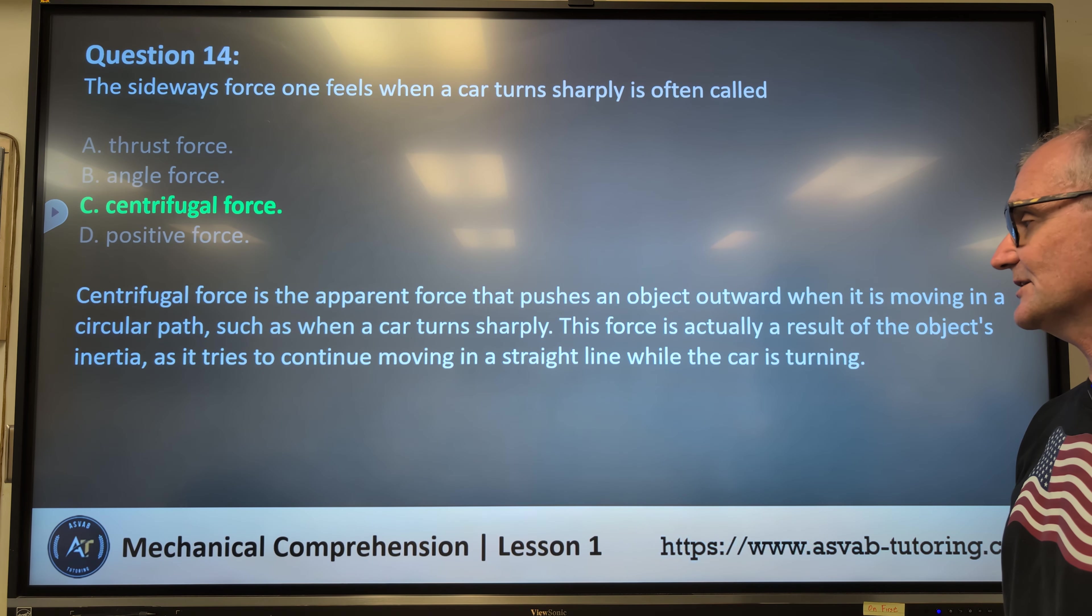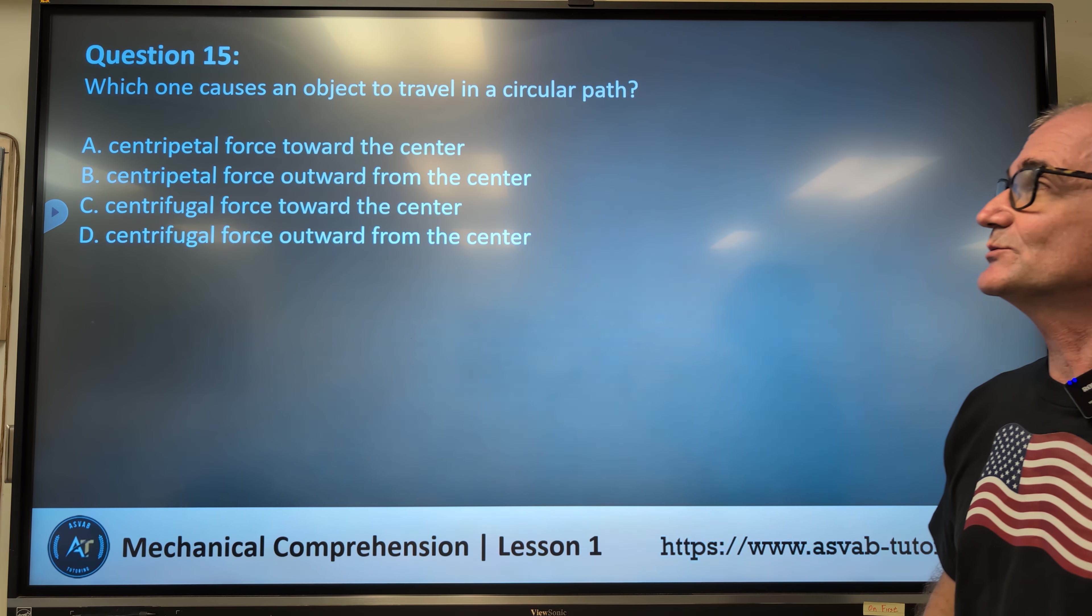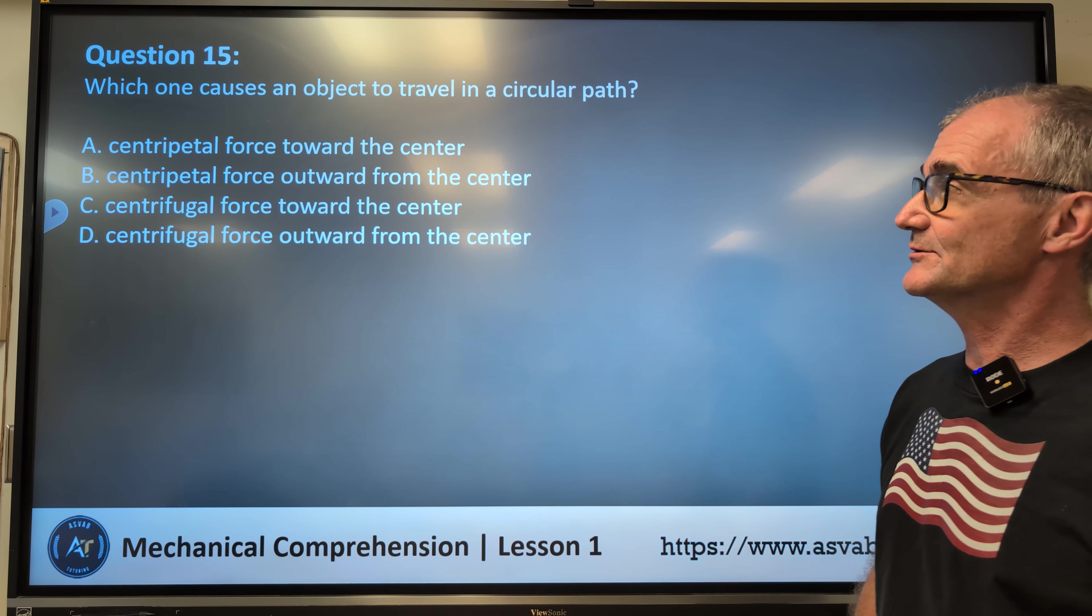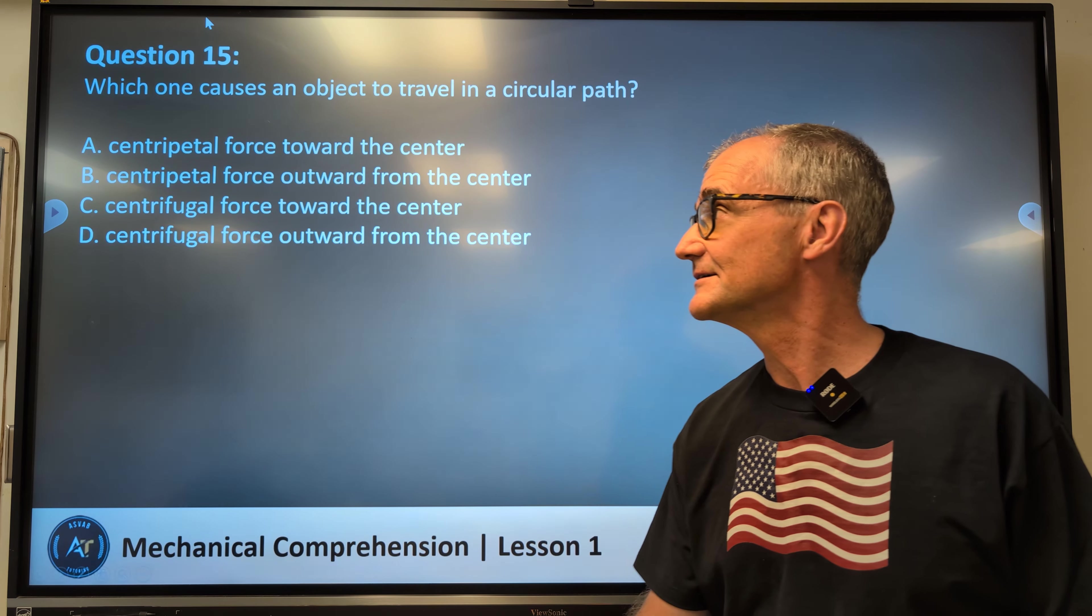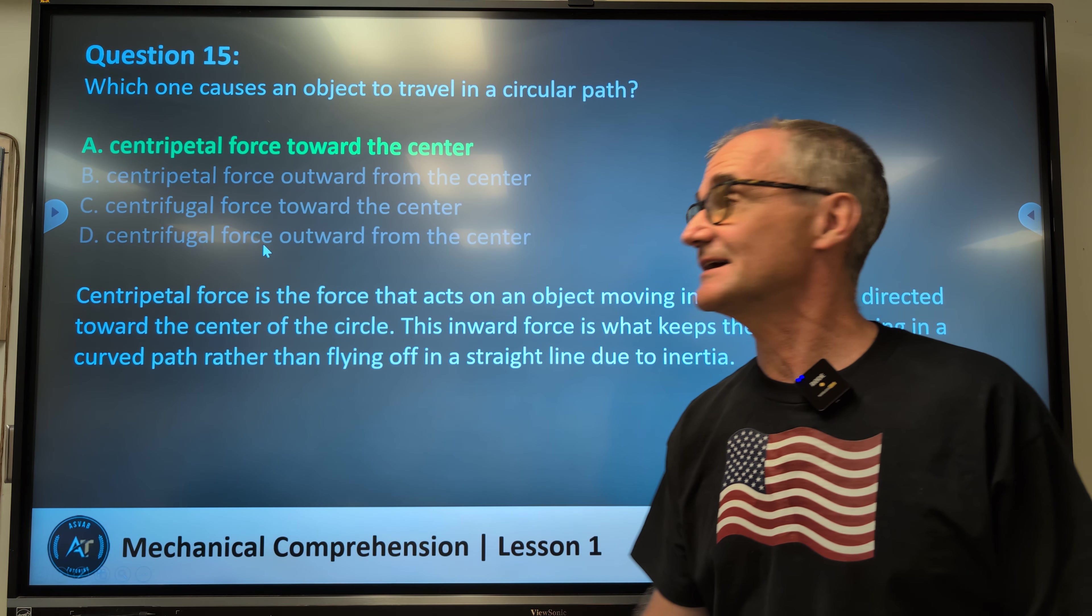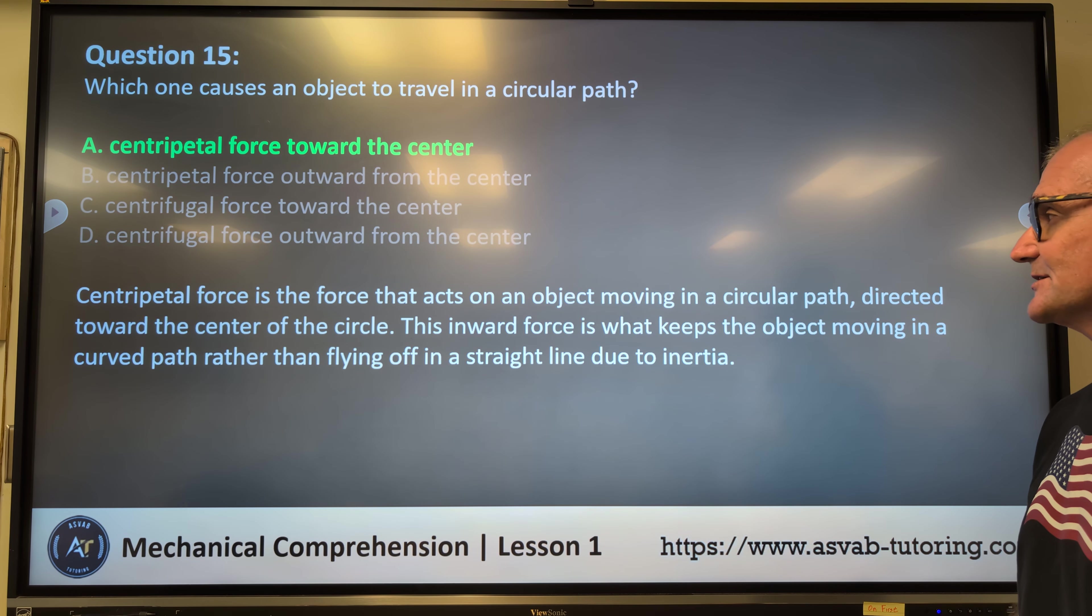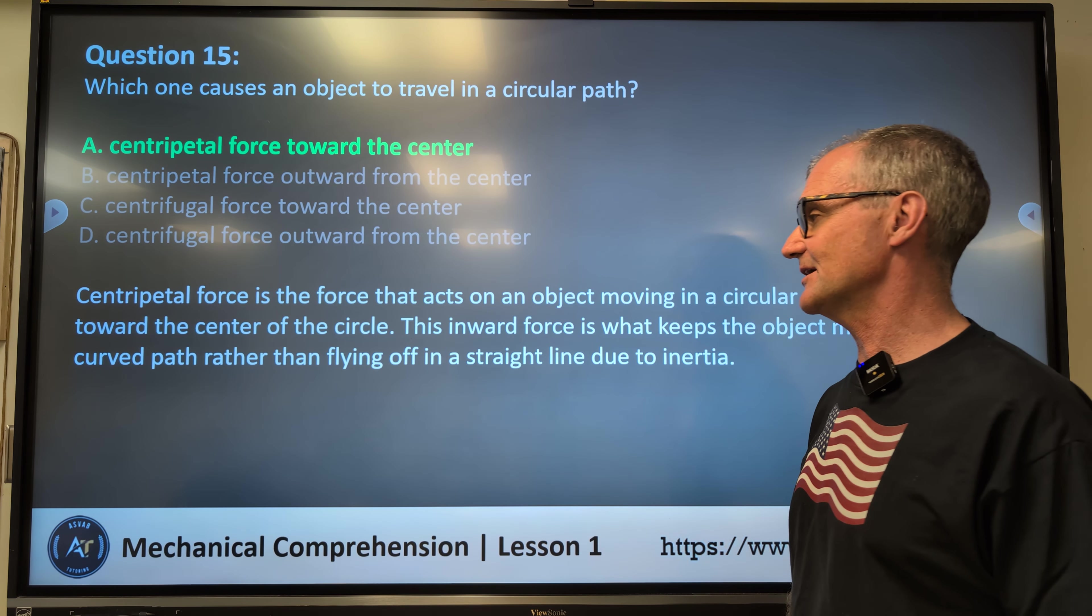All right, last one right here, number 15. Which one causes an object to travel in a circular path? A, centripetal force toward the center, B, centripetal force outward from the center, C, centrifugal force toward the center, or D, centrifugal force outward from the center. Correct answer, A, centripetal force toward the center. The centripetal force is a force that acts on an object moving in a circular path directed toward the center of the circle. This inward force is what keeps the object moving in a curved path rather than flying off in a straight line due to its inertia.